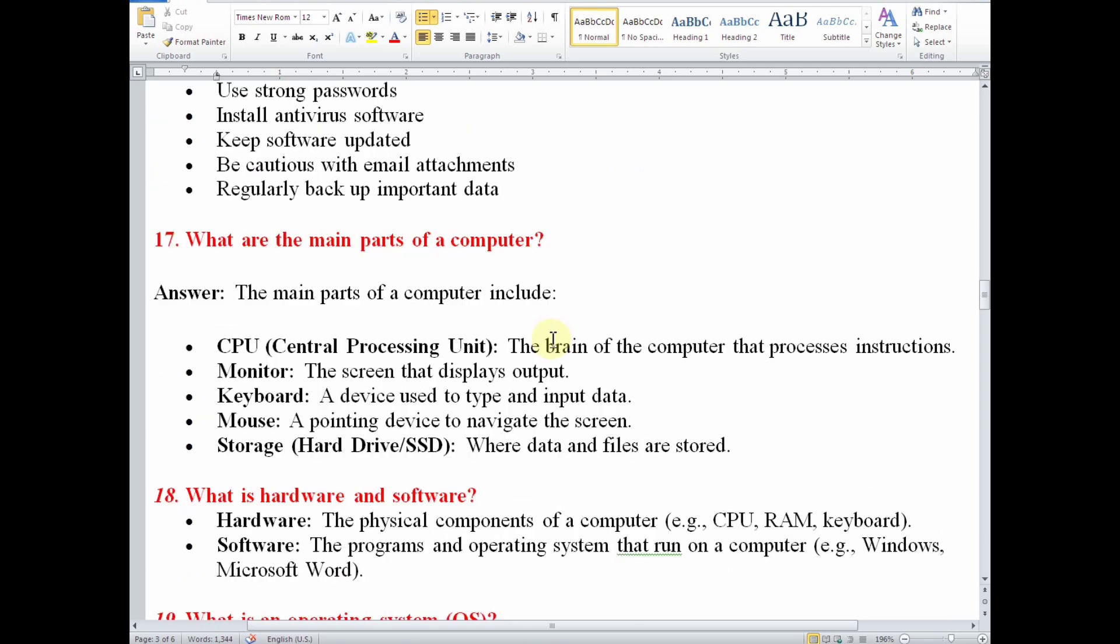Number 17, what are the main parts of a computer? The main parts include CPU, which is central processing unit, the brain of the computer that processes instructions. Monitor, the screen that displays output. Keyboard, a device used to type and input data. Mouse, a pointing device to navigate the screen. Then storage that consists of hard drive, SSD, where data and files are stored.